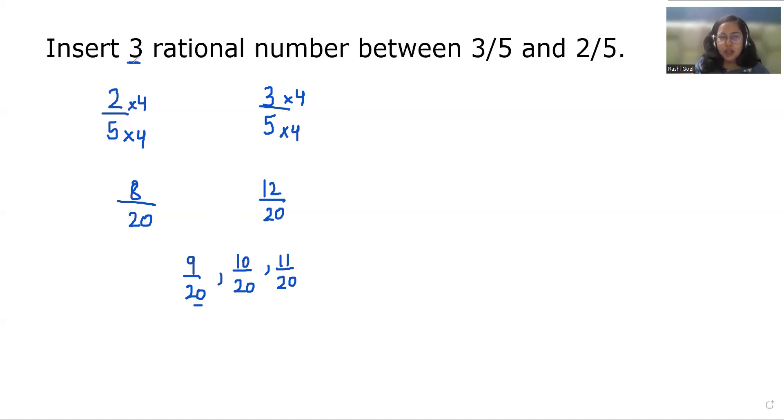If there were four rational numbers, then we should multiply by 5 in numerator and denominator. I hope it's clear and you find it useful, so please give us a thumbs up and do subscribe to my channel. Stay tuned.